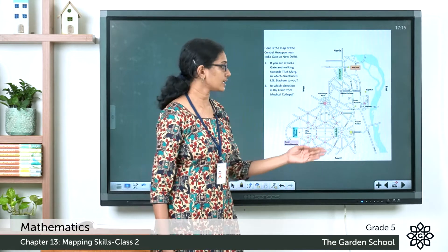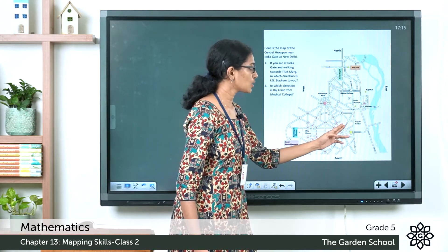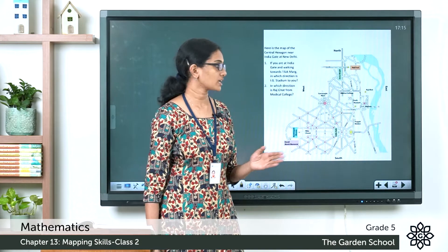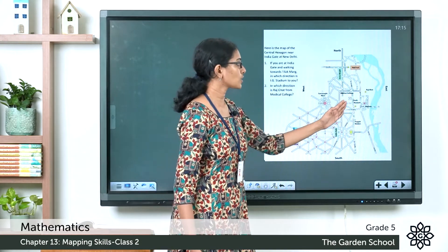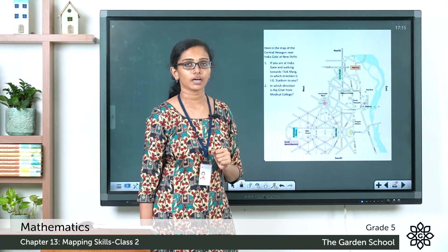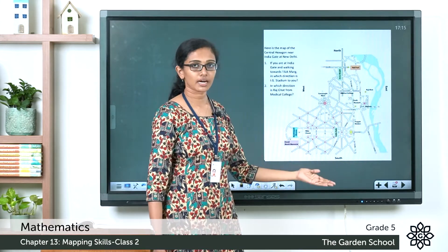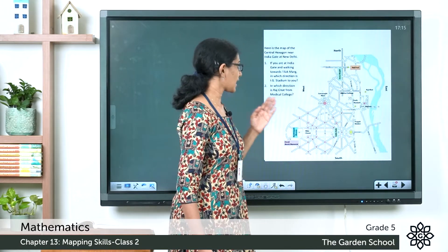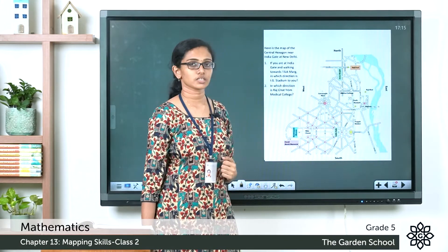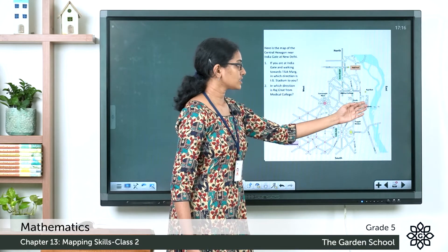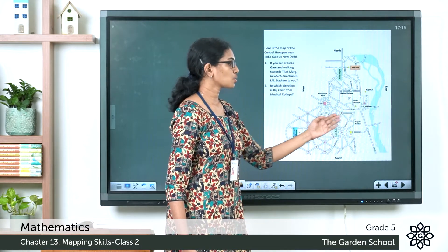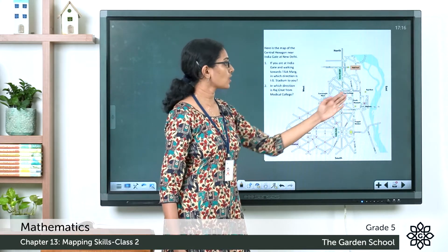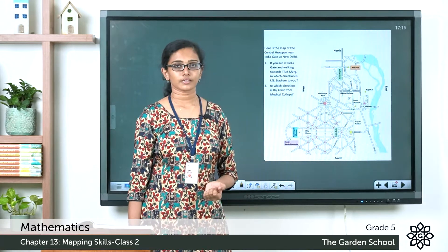You can say IG Stadium is to the north of Tilakmark, or more specifically to the north east of Tilakmark. We can see the four directions marked here on the map: north, south, east and west. So the IG Stadium is towards the east, or more specifically north east of Tilakmark.